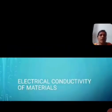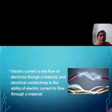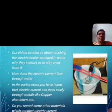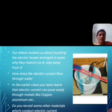Today we will learn about electrical conductivity of materials. Electric current is the flow of electrons through a material, and electrical conductivity is the ability of electric current to flow through a material. Our elders caution us about touching an electric heater submerged in water — why do they instruct us to stay away from it? How does electric current flow through water?